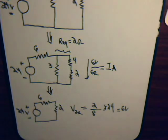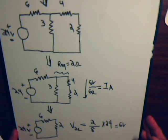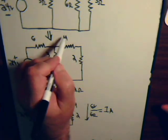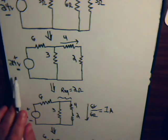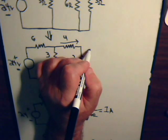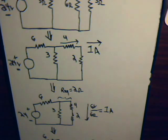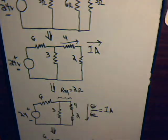So the 4 ohm resistor has 1 amp of current going downward — which means the current is going to the right. So what we have is the current that goes through the 4 ohm resistor resulting from the voltage source: 1 amp going to the right. Remember that as we move on to consider the second part of the problem.